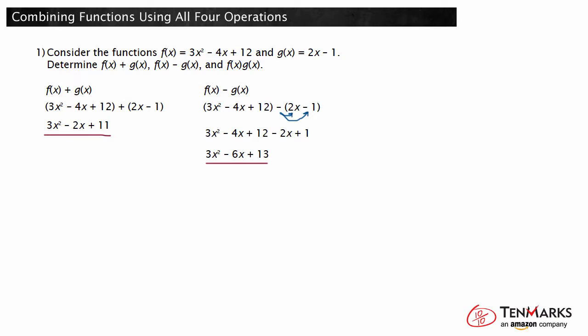Finally, let's determine f of x times g of x. Substituting the given expression in for f of x and g of x results in the quantity 3x squared minus 4x plus 12 times the quantity 2x minus 1. Performing multiplication requires the distributive property. Distributing 3x squared to 2x minus 1 gives 6x cubed minus 3x squared. Distributing negative 4x to 2x minus 1 gives negative 8x squared plus 4x. And distributing 12 to 2x minus 1 gives 24x minus 12.